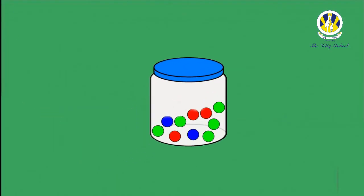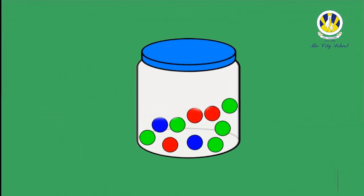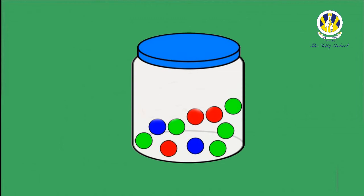Now estimate how many beads are there in this jar. Are these a hundred beads? What do you think? Bravo! These beads are way less than 100, so what's your estimation? Well estimated — maybe 8 or 10.